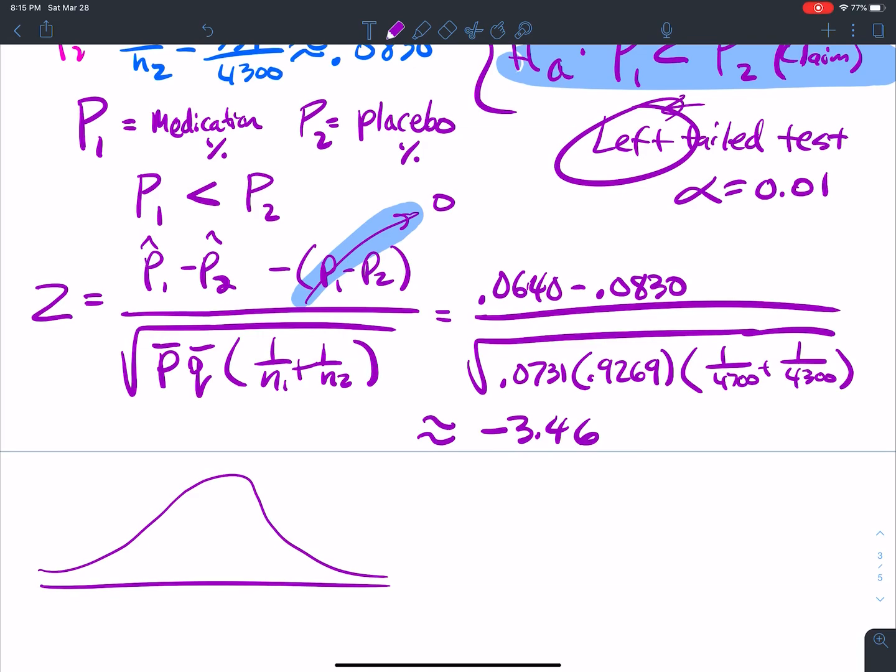So that means what? That means I want a left-tail area, shade to the left, alpha 0.01. I go look it up. That's a z naught critical value of negative 2.33. If you go look up 0.01.